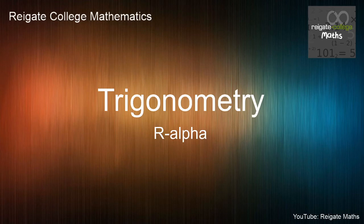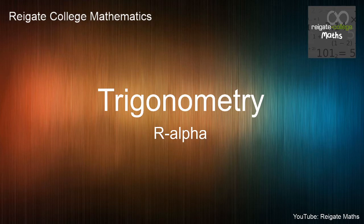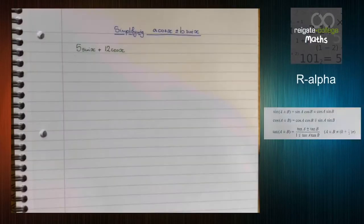Hello and welcome to another video from Reigate Maths focusing on the pure side of the year 2 A-level maths content. This video is in the topic of trigonometry, looking at a method to simplify trigonometric expressions. The method is often known as the r-alpha method, but it uses the addition formulae.